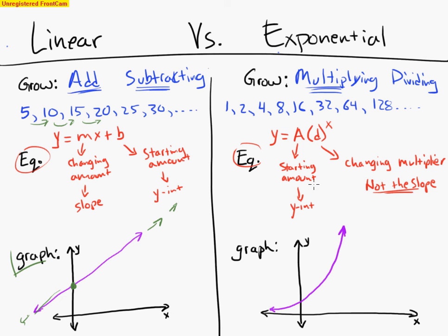But an exponential function starts going faster and faster. Here I have 16, then 32, then 64 — before I know it I'm in my hundreds, growing faster and faster. Same with my graph: I start going slowly, but then I'm going faster and faster and faster. I'm going to start going up and up and up. So my exponential graph has this curve and it goes steeper and steeper, meaning my slope changes.